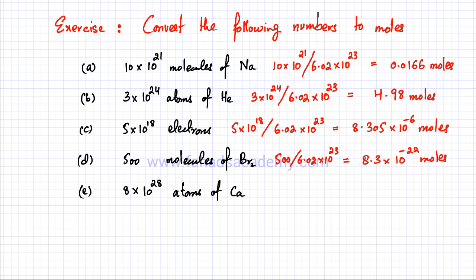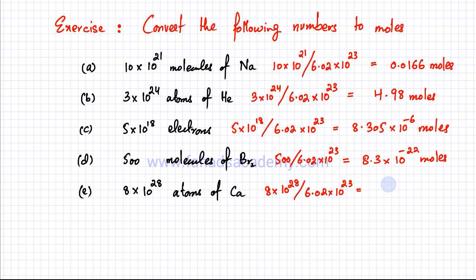For part (e), I have 8 × 10²⁸ atoms of calcium — a very large amount. Dividing 8 × 10²⁸ by 6.02 × 10²³, the answer is approximately 132,890 moles, or about 1.33 × 10⁵ moles. That's how you convert any number — whether counting molecules, atoms, or electrons — into moles.